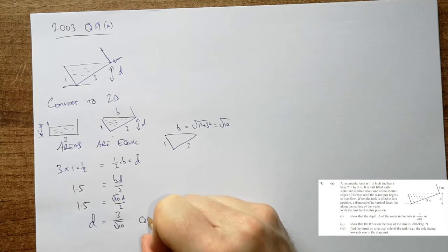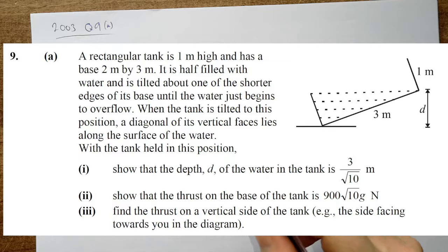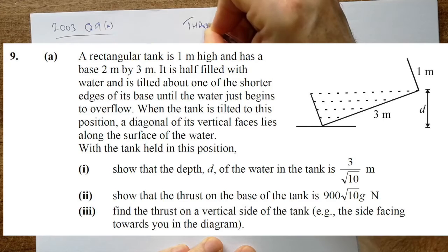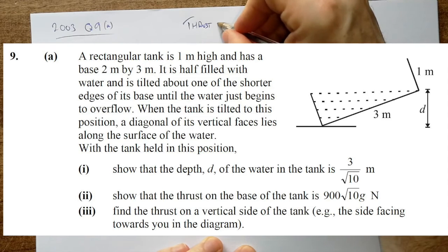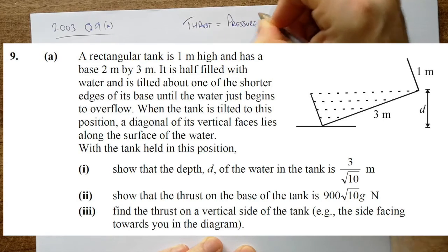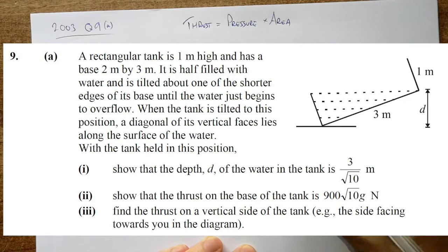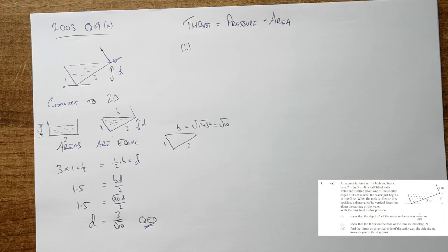3D shown. So that bit wasn't so bad but it does get a little bit trickier as we move along here. Now thrust is the one we don't often see, and that is equal to pressure by the area. So let's have a look at part 2.